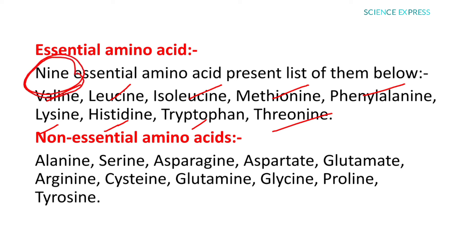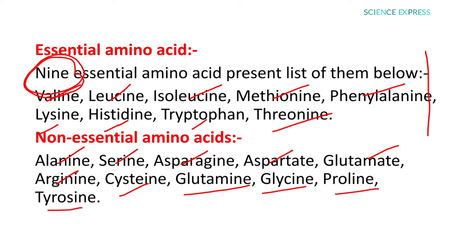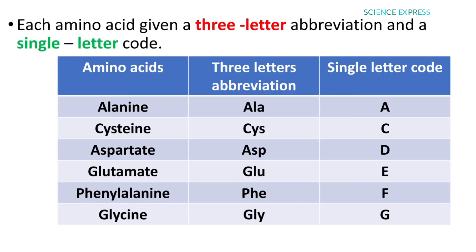The essential amino acids include: valine, leucine, isoleucine, methionine, phenylalanine, lysine, histidine, tryptophan, and threonine — making approximately nine essential amino acids in total. The non-essential amino acids include: alanine, serine, asparagine, aspartate, glutamate, arginine, cysteine, glutamine, glycine, proline, and tyrosine. Together, the essential and non-essential amino acids total 20 amino acids.